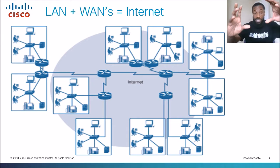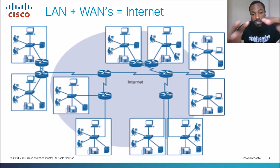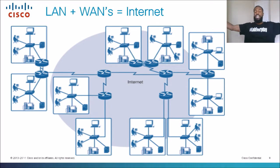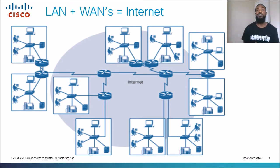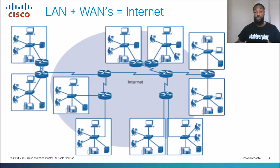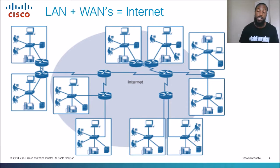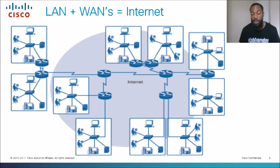The internet is basically a combination of a whole bunch of LANs and WANs put together — just millions of LANs and WANs. This is why I love networking — it's so amazing how you can watch a video stream, download a video on your phone, or download an app and do anything on the internet. It's done by a combination of LANs and WANs and sent back to your computer, with IP addressing and routing underneath it all.